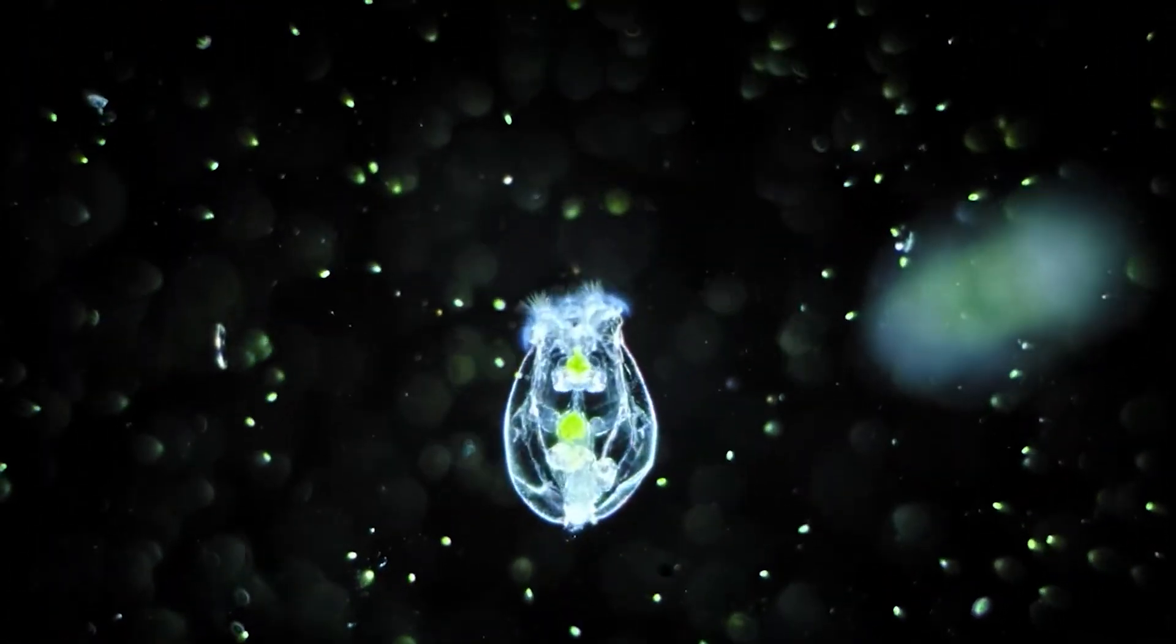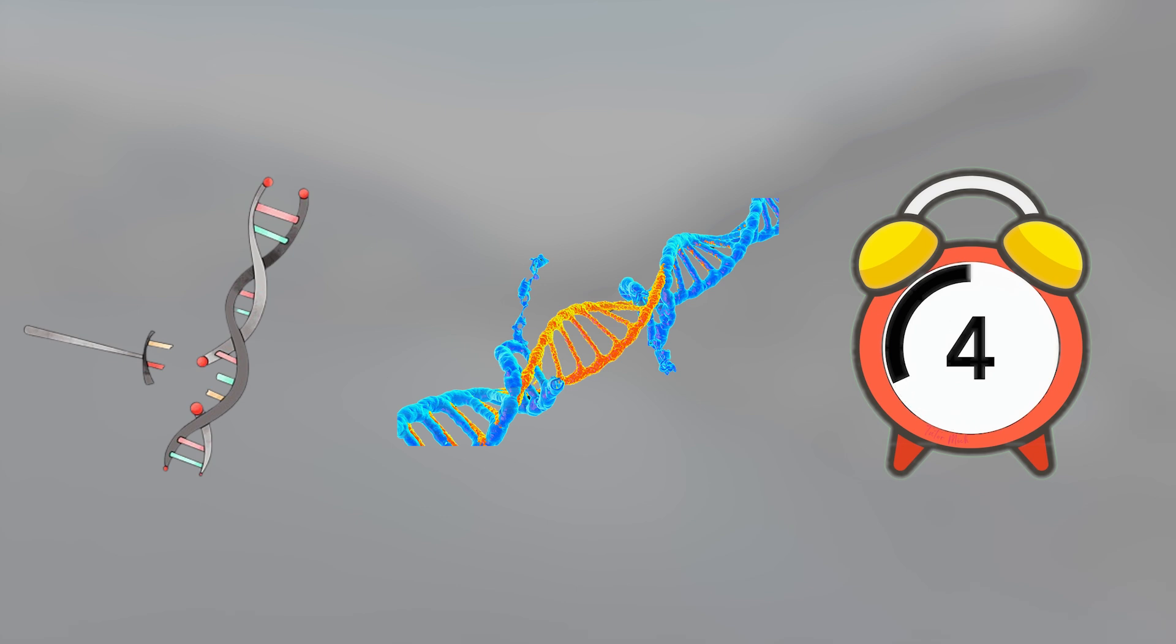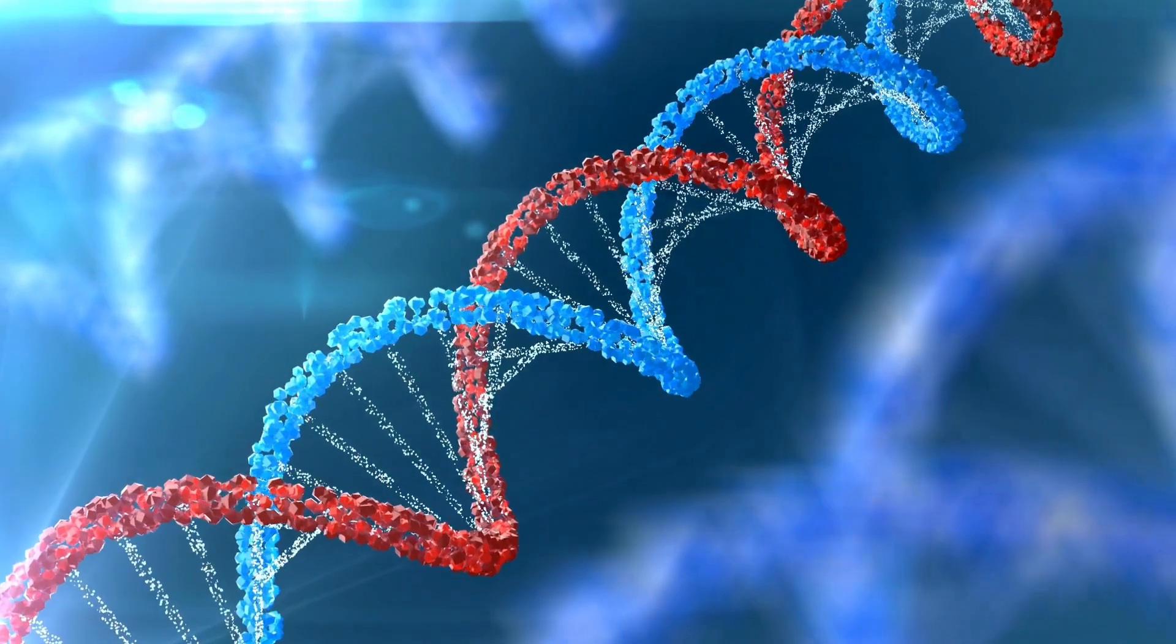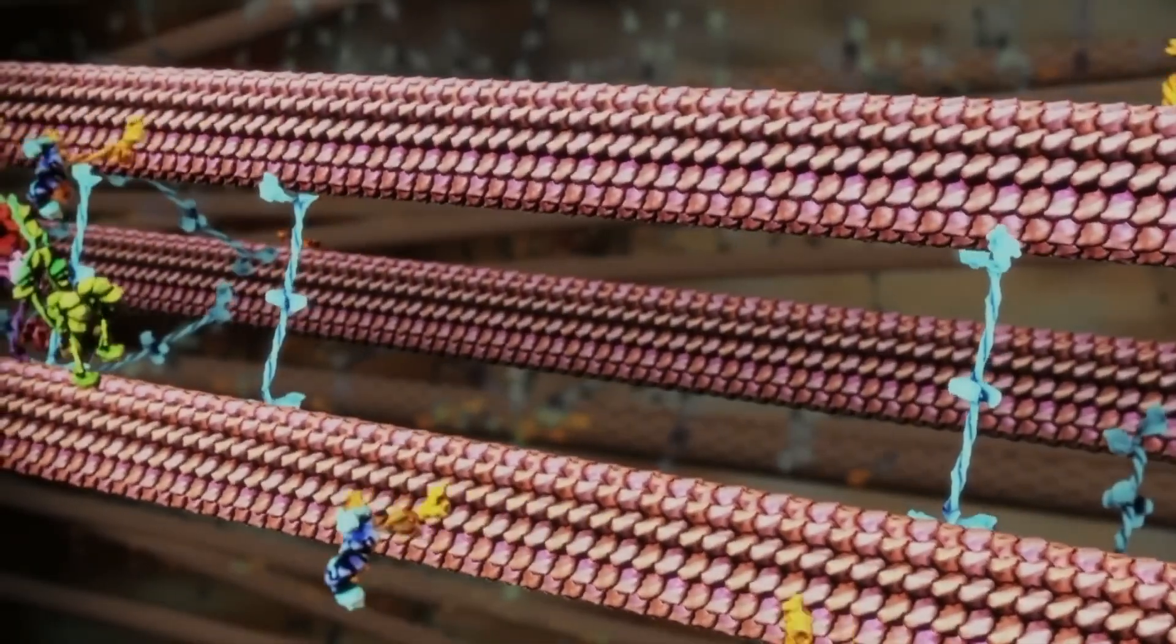But this rotifer didn't just come back, it came back clean. Fully intact, fully functional, no mutation, no degradation, like time hadn't touched it at all. That shouldn't be possible, unless one of two things is true: either its DNA was miraculously preserved, or it has built-in repair systems that science still doesn't understand. And that's just the beginning.